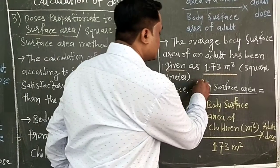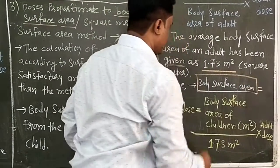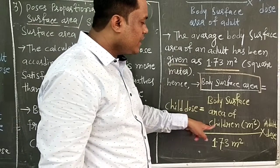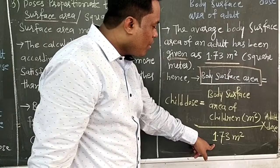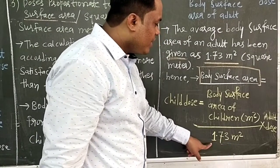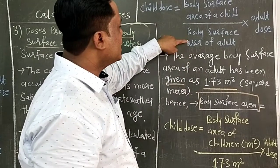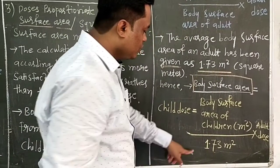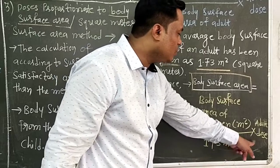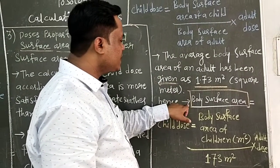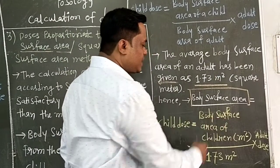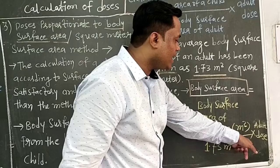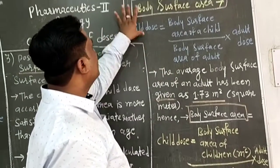Therefore, the final formula for body surface area is: Child dose = (Body surface area of child in square meters) / 1.73 square meters × Adult dose. Here, 1.73 square meters is the standard body surface area of an adult.